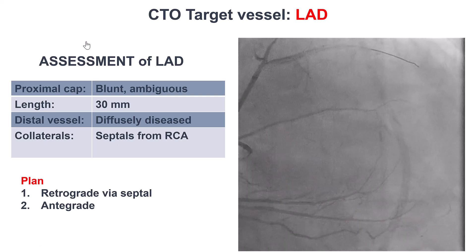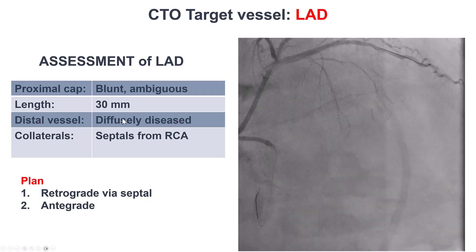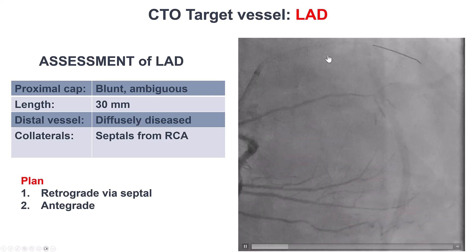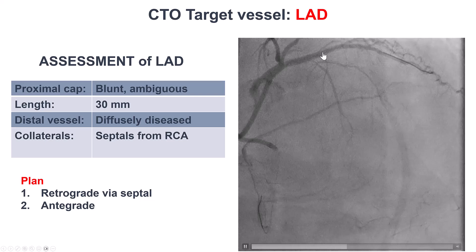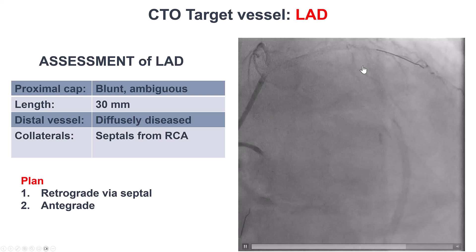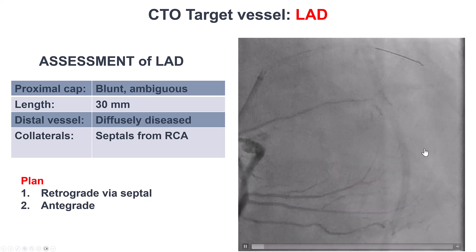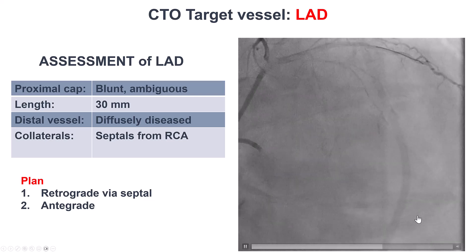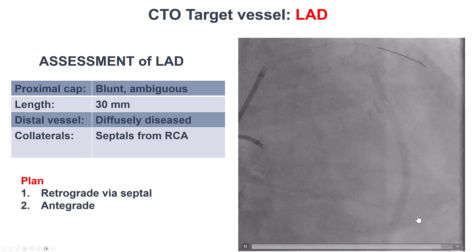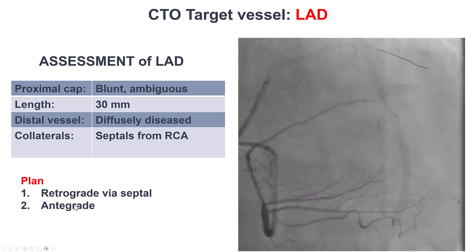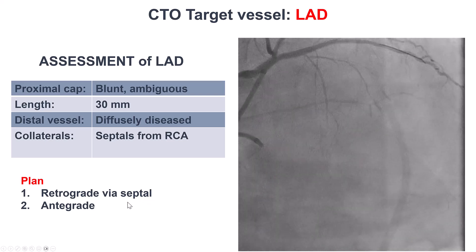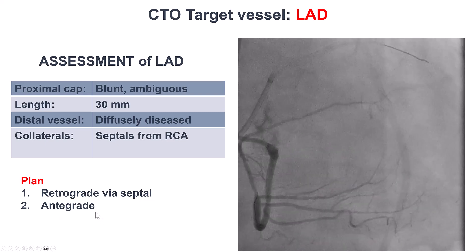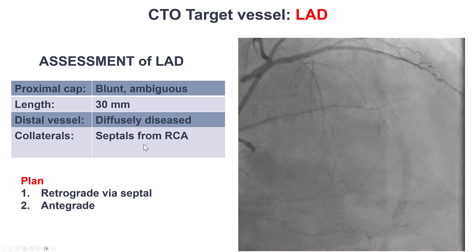So how to approach this? We have an LAD with a blunt, ambiguous proximal cap. The length seems to be about 30 mm, so fairly long. The distal vessel is diffusely diseased and fills mainly through septal collaterals from the right coronary artery. Our plan was to go retrograde to resolve the proximal cap ambiguity, and if that didn't work, potentially try antegradely to resolve the ambiguity.